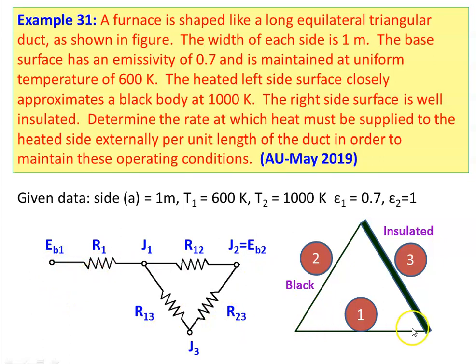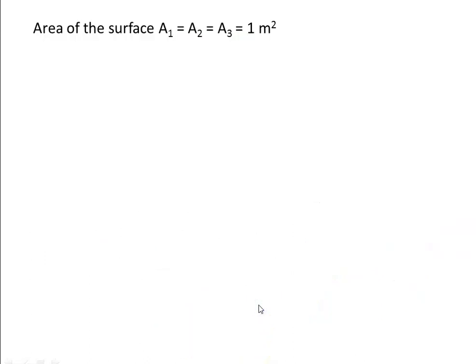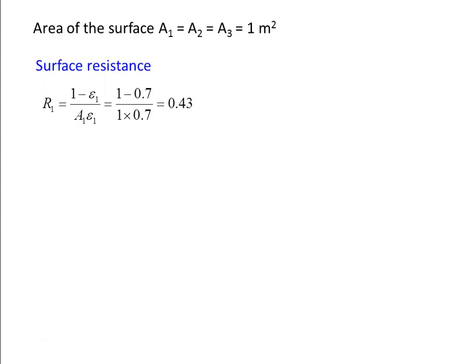The first surface is the base surface which has emissive power Eb1, surface resistance R1, and radiosity J1. Surface 2 is a black surface, so there is no surface resistance and J2 equals Eb2. Surface 3 is re-radiating and insulated, so J3 is also equal to Eb3. The area of the surface, taking equal sides of 1 meter with unit length, gives area equal to 1 meter. The surface resistance of the first surface R1 equals (1 minus epsilon 1) divided by (A1 times epsilon 1), which is (1 minus 0.7) divided by (1 times 0.7), equal to 0.43.